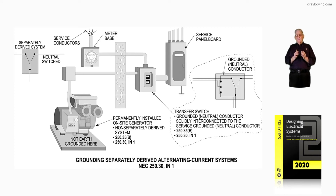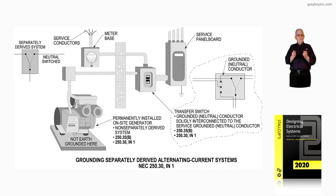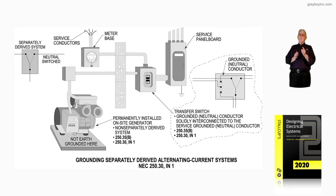Let's talk about the difference with the legally required standby generator. It's wired by Article 701. You can bring it on in 60 seconds, you can have a 15-minute delay, and you can mix the wiring with the general wiring. But if it's an emergency generator under 700.2 informational note, you cannot mix the wiring with the general wiring — it has to be separated, run separate, and you have to bring it on within 10 seconds, and you've got to bring it on automatically.